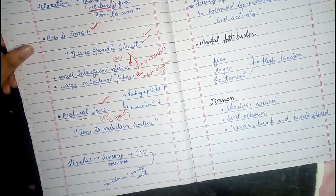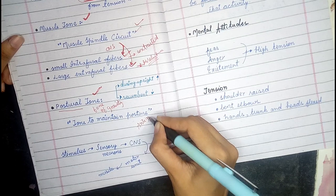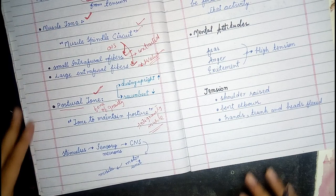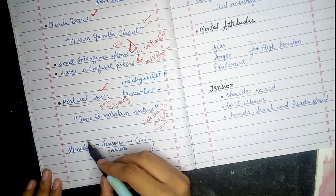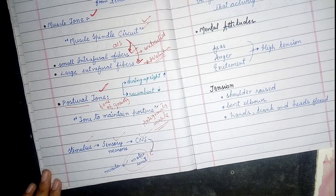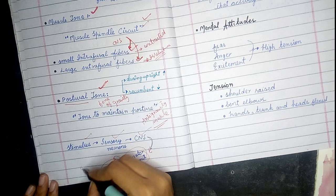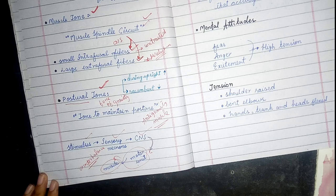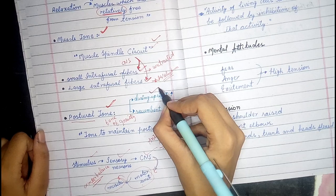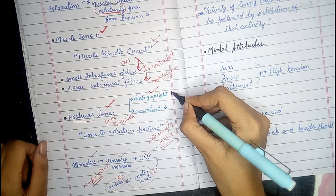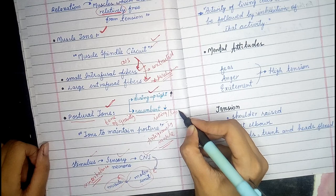The muscles that counterbalance gravity are called anti-gravity muscles. In postural tone, a stimulus activates a sensory neuron, the CNS generates a motor neuron, and the motor unit is generated to innervate muscle fibers. During upright position, the postural tone is greatest in your muscles. In the recumbent or lying position, the postural tone is relatively lower.